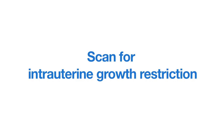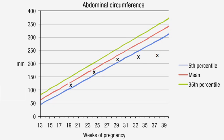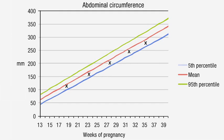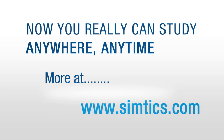Perform a scan to distinguish between intrauterine growth restriction, which is abnormal, and a fetus that may be small for gestational age but within normal limits. The assessment for intrauterine growth restriction may include fetal biometry.